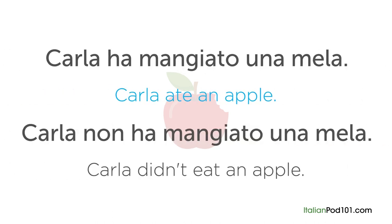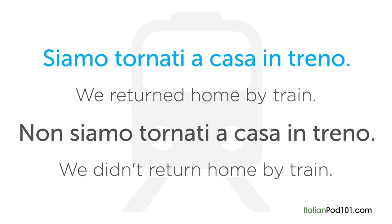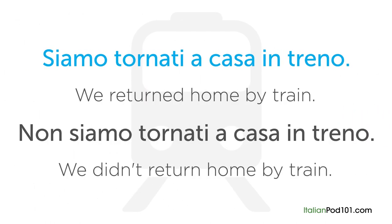If it were 'Carla ate an apple,' it would be 'Carla ha mangiato una mela.' Adding 'non' before the verb makes it negative: 'Carla non ha mangiato una mela.' Similarly, 'Siamo tornati a casa in treno' becomes 'Non siamo tornati a casa in treno.' You can create any negative sentence in Italian simply by adding 'non' before the verb.